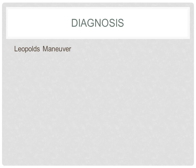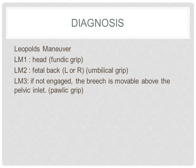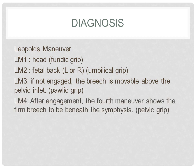This is the Leopold's maneuver of a breech presentation. LM1: head. LM2: either fetal back left or fetal back right. LM3: if the fetus is not yet engaged, then the breech is movable above the pelvic inlet. And LM4: after engagement, the fourth maneuver shows the firm breech to be beneath the symphysis.